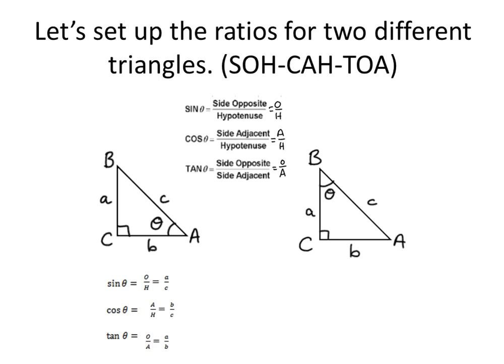Now let's look at a different triangle where theta is at angle B. Sine of theta is opposite over hypotenuse — the opposite side to theta is B and the hypotenuse is C, so sine theta equals B over C. Cosine is adjacent over hypotenuse — the adjacent is A and the hypotenuse is C, so cosine theta equals A over C. Tangent is opposite over adjacent, so tangent theta equals B over A.